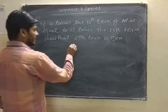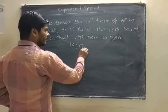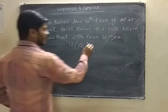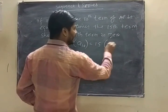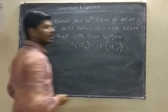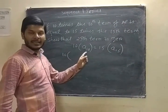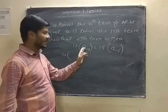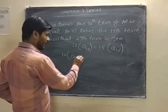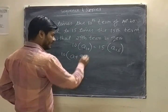10 times the 10th term is equal to 15 times the 15th term. Now what is the formula for a_n, that is a plus n minus 1 d. It is a_10, then it is a plus 10 minus 1, 9d.